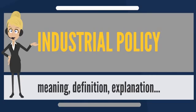Industrial policies are sector-specific, unlike broader macroeconomic policies. Examples of the latter, which are horizontal, economy-wide policies, are tightening credit and taxing capital gains, while examples of industrial policy, which involves vertical, sector-specific policies, include protecting textiles from imports and subsidizing export industries.